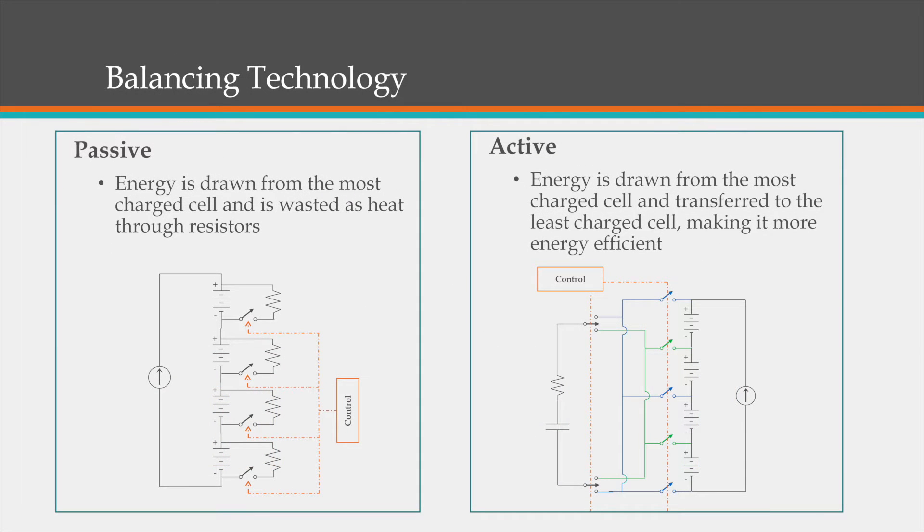There are two main categories of cell balancing topologies. These are called passive balancing and active balancing schemes. In passive balancing, each cell is connected to a load through a switch. That way, if a cell's state of charge, or what is more commonly referred to as SOC, is larger than the average SOC, the switch will close and its additional energy will be dissipated through the load resistor.